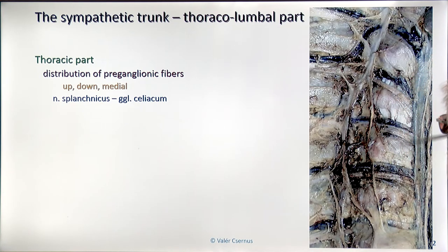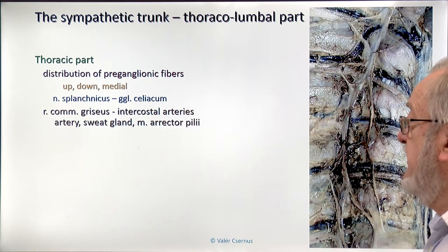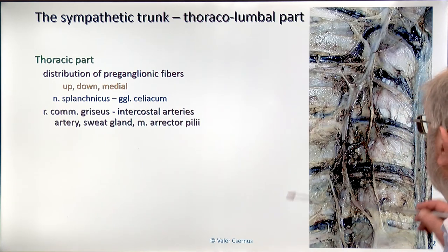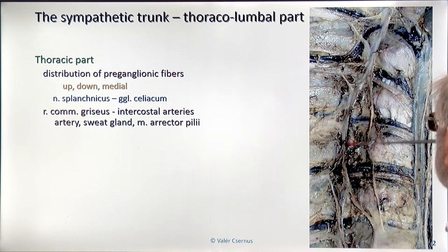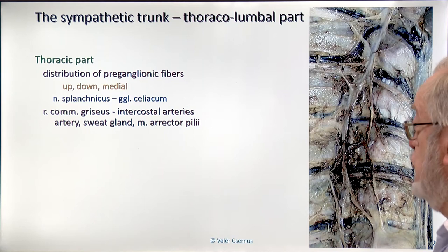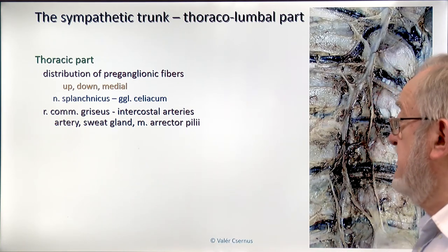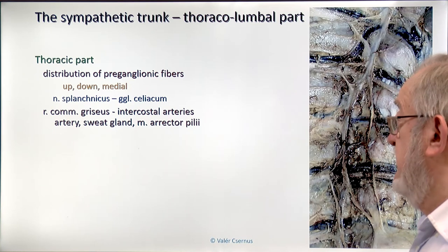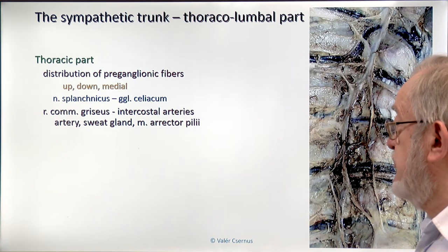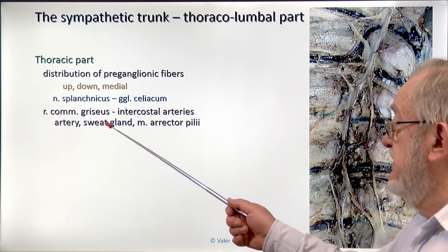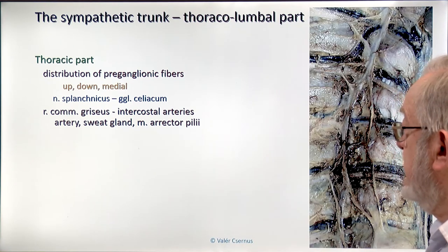Once again, these are all pre-ganglionic fibers aiming at the ganglion. The gray communicating branches immediately leave and join the artery — they do not go up and down. They mostly supply the muscular wall of the artery, and in this way they control the blood supply of the area, but also innervate the sweat glands and the musculus erector pili.